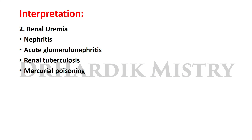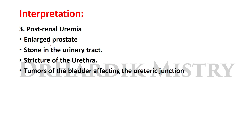Renal causes of uremia include nephritis, acute glomerulonephritis, renal tuberculosis, and mercurial poisoning. Post-renal causes include enlarged prostate, stone in the urinary tract, stricture of the urethra, and tumors of the bladder affecting the ureteric junction.